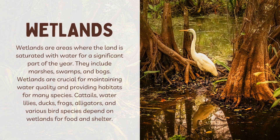Wetlands are areas where the land is saturated with water for a significant part of the year. They include marshes, swamps, and bogs. Wetlands are crucial for maintaining water quality and providing habitats for many species. Cattails, water lilies, ducks, frogs, alligators and various bird species depend on wetlands for food and shelter.